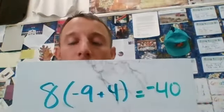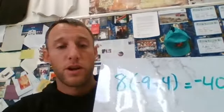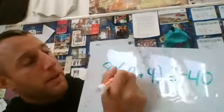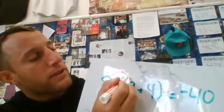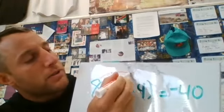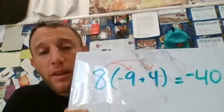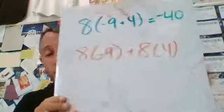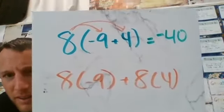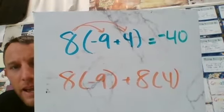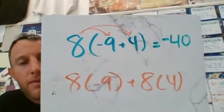So I know my answer already, but what the distributive property says is if these terms are not like, meaning if this negative nine and this four have different variables attached to them, I can distribute out the eight. And the way it's going to look is it's going to be eight times negative nine plus eight times four. So this is the distributive property. We're distributing that eight out to both of those terms, the negative nine and the four.